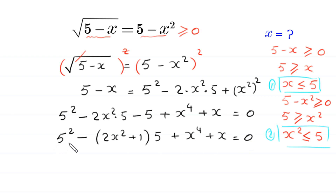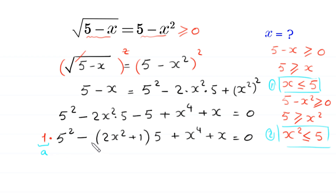This equation is a quadratic equation in terms of 5. In this equation, 1 is a, negative 2x² plus 1 is b, and x to the power 4 plus x is c.